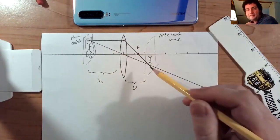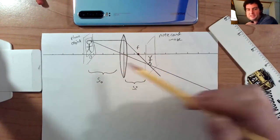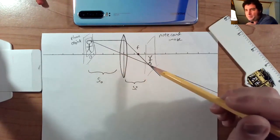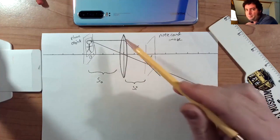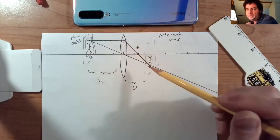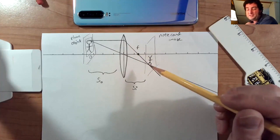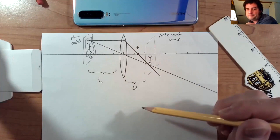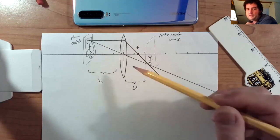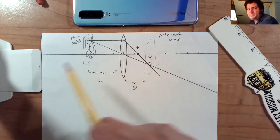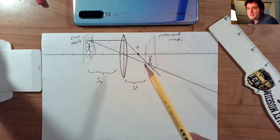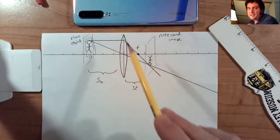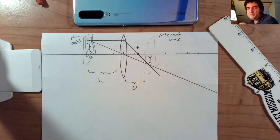So it's not that for any given object distance, the image ends up at the focal point. But because the parallel ray bends through the focal point, the fact that the image is in this case right here, it tells us that the focal point must be here. So as we shift the object around, the image is going to shift around. But this ray is always going to continue to pass through the focal point.